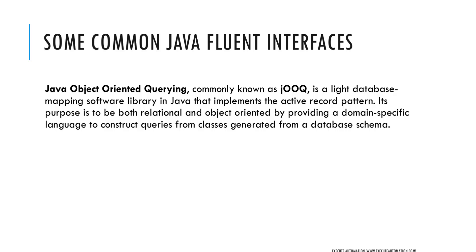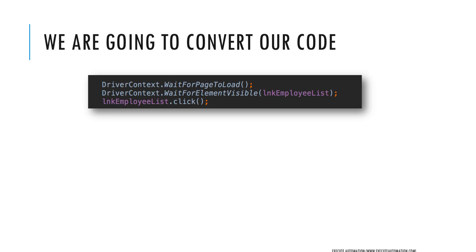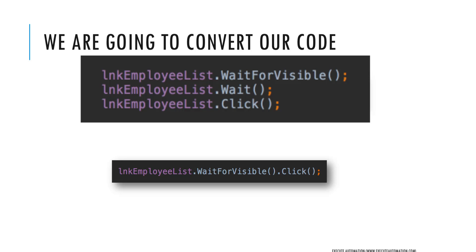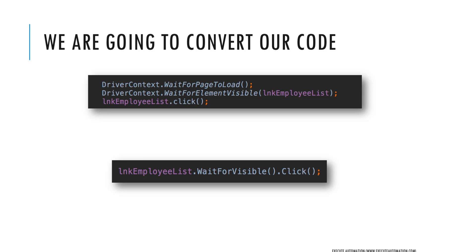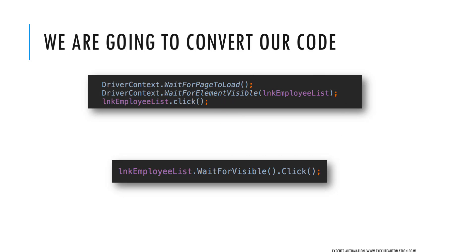In our case, the code implementation we're going to do will look something like this. In our previous video we used `lnkEmployeeList.click()` and `driverContactsAreWait.forPageLoad`, `waitForElementVisible`, and then we converted it to a custom control like `lnkEmployeeList.wait().waitForVisible().click()`. That's going to be transformed into just one liner — `lnkEmployeeList.waitForVisible().click()` — where we are chaining our own custom controls to make use of domain-specific language coding within our code.